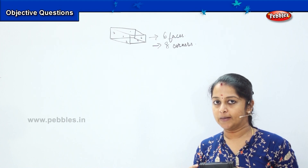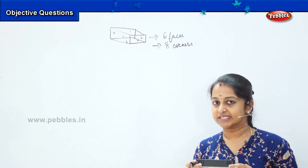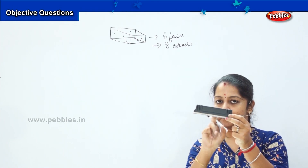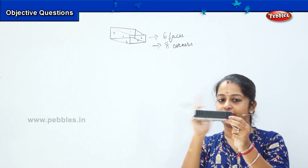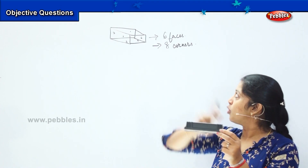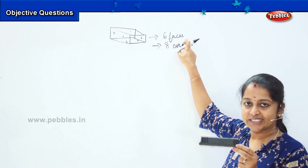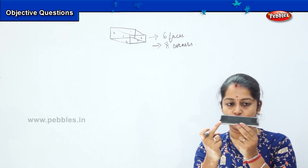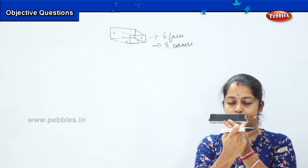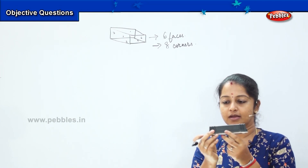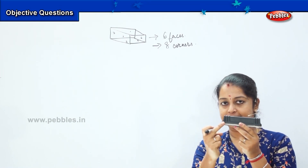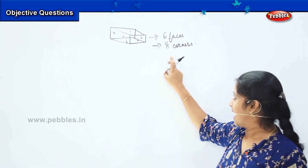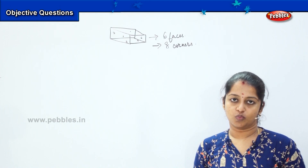Do you want me to explain again? Shall we count the number of faces again? 1, 2, 3, 4, 5 and 6. A cuboid has got 6 faces. And how many corners? 1, 2, 3, 4, towards the back — 5, 6, 7 and 8. So, there are 6 faces and 8 corners in a cuboid.